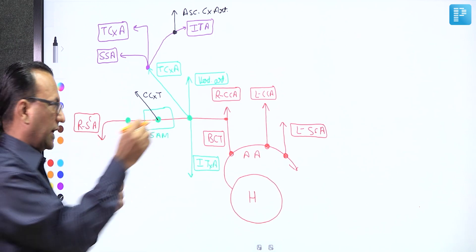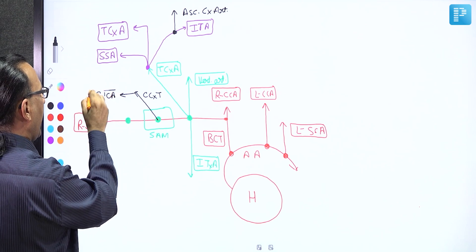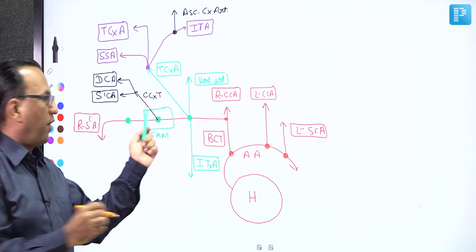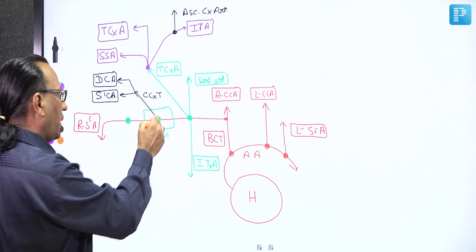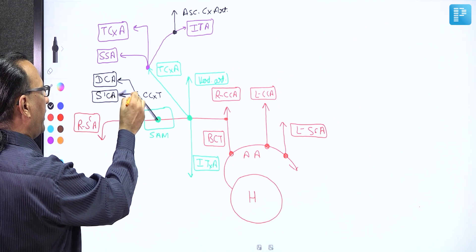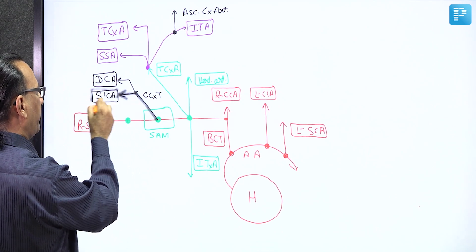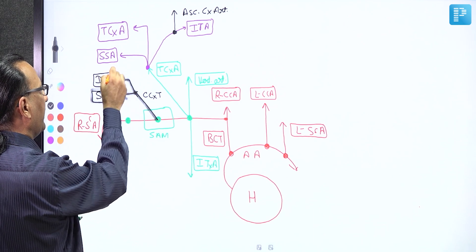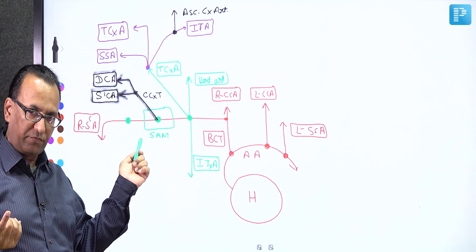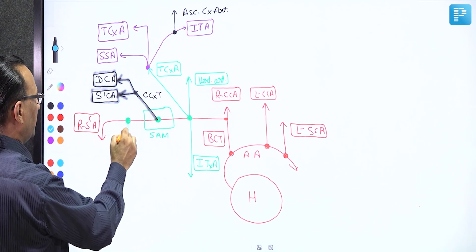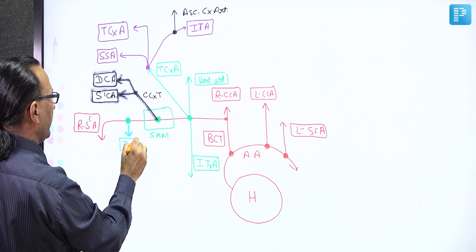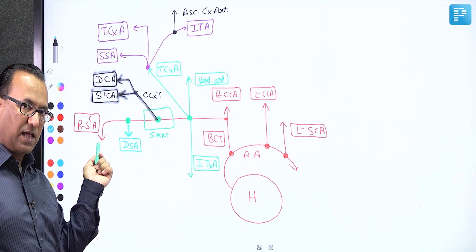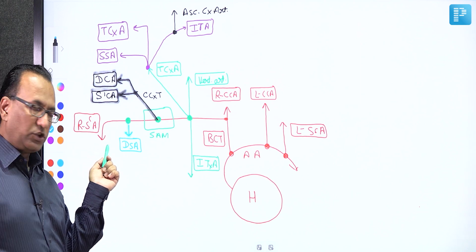The costal cervical trunk supplies the costal and neck regions, giving two branches: the superior intercostal artery and the deep cervical artery. If the costal cervical trunk is blocked, there will be ischemia in the upper intercostal spaces due to decreased blood flow in the superior intercostal artery, plus ischemia in the neck region due to decreased blood flow in the deep cervical artery. The dorsal scapular artery comes from the third part of the subclavian artery and participates in scapular anastomosis.